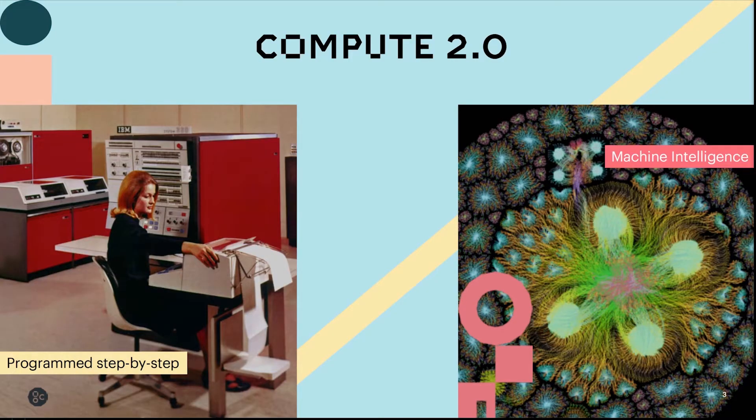What we're really building is a processor that will allow innovators to develop the next generation in machine intelligence. For 70 years we've told computers what to do step by step in a program — we've literally programmed the devices. They've run algorithms and come up with very specific solutions, but many problems — I would argue most of the problems we need to solve — are intractable to an algorithm, either because it takes too long to compute or requires too much data. Machine intelligence allows us to learn from the data to come up with solutions to these very complex problems.